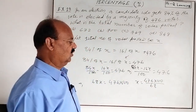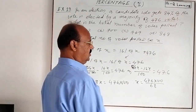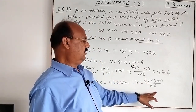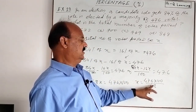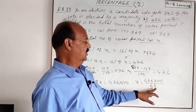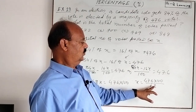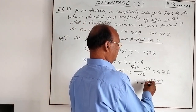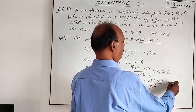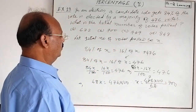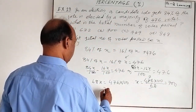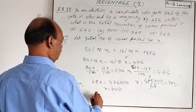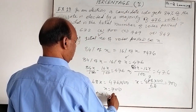Therefore X equals 476 into 100 divided by 68. We can simplify: 68 times 7 gives 476, so after cancellation we get 7 into 100, which equals 700. So the total number of votes polled is X equal to 700. Option B is correct.